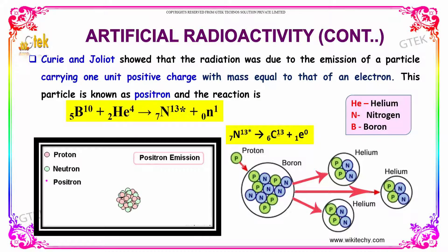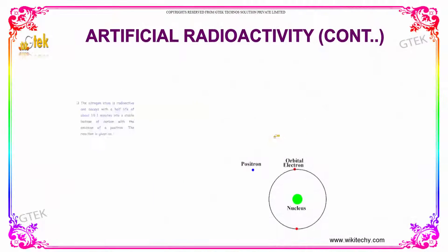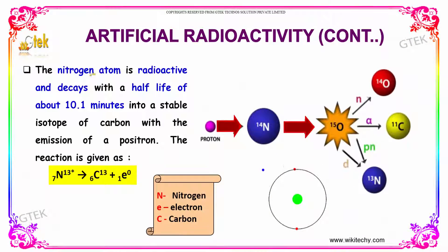The nitrogen atom is radioactive and decays with a half-life of about 10.1 minutes into a stable isotope of carbon with the emission of a positron. Here is the final equation.